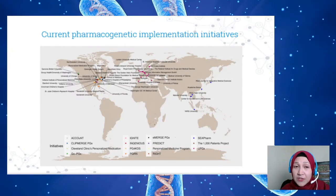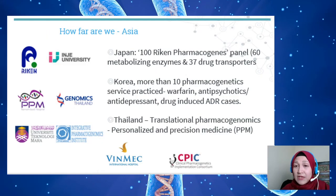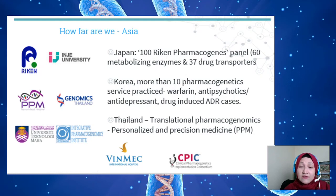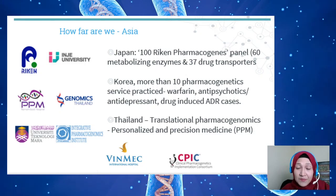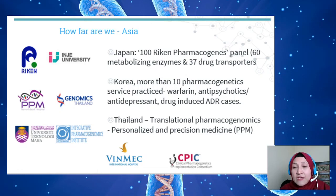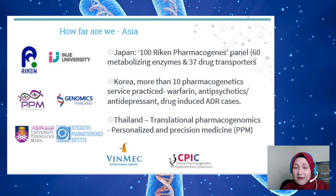There is a global drive toward pharmacogenetics implementation, including networks of collaboration between many countries. In Asia: Japan has a 100-weeknd pharmacogenes panel gathering 60 predictors in metabolizing enzymes and 37 in drug transporter genes. Korea has more than 10 pharmacogenomics services in practice, covering warfarin, antipsychotics, antidepressants, and ADR cases. Thailand has a Translational Pharmacogenomics Personalized and Precision Medicine initiative, testing patients pharmacogenetically before initiating risky drug therapy.